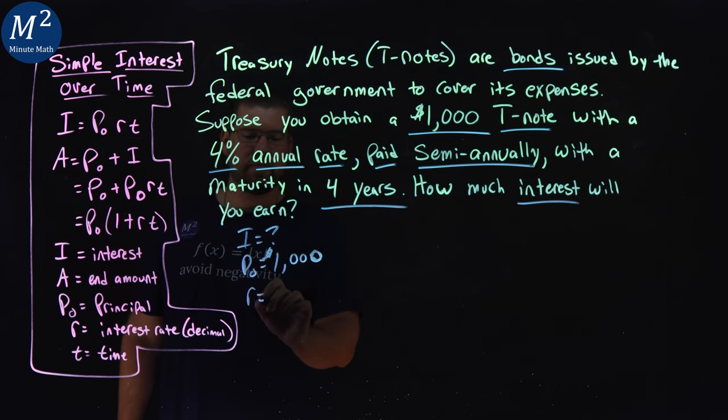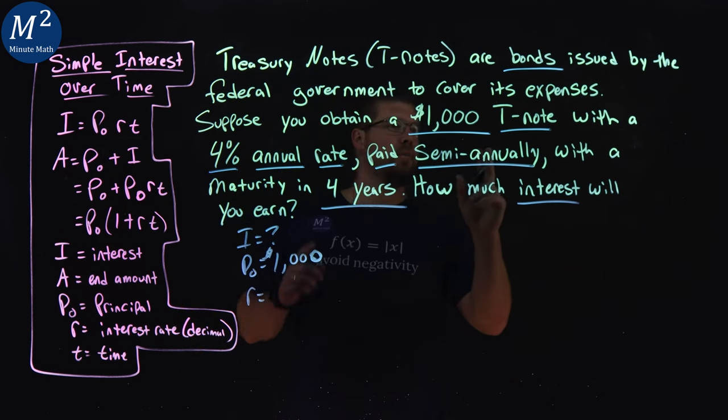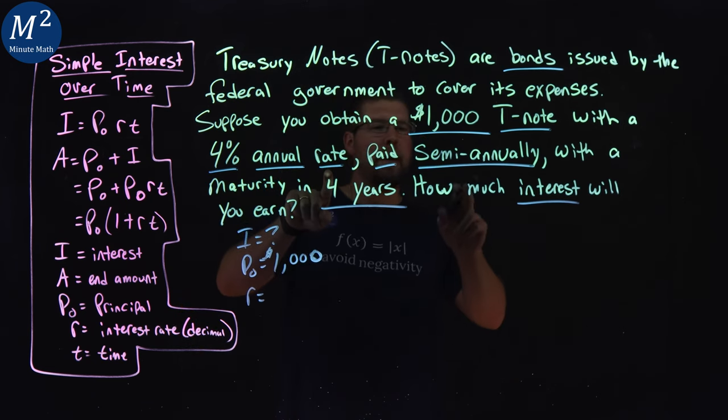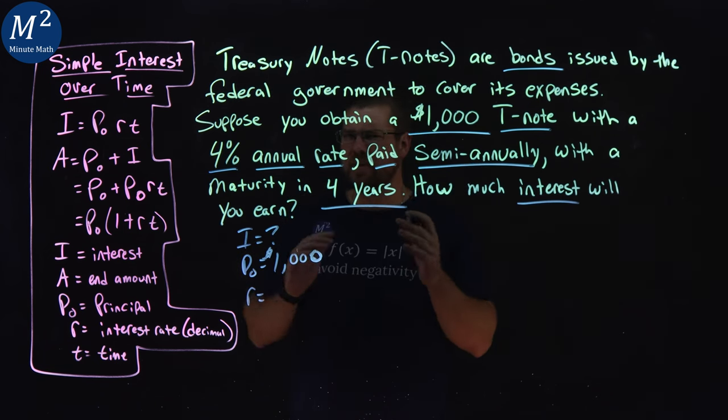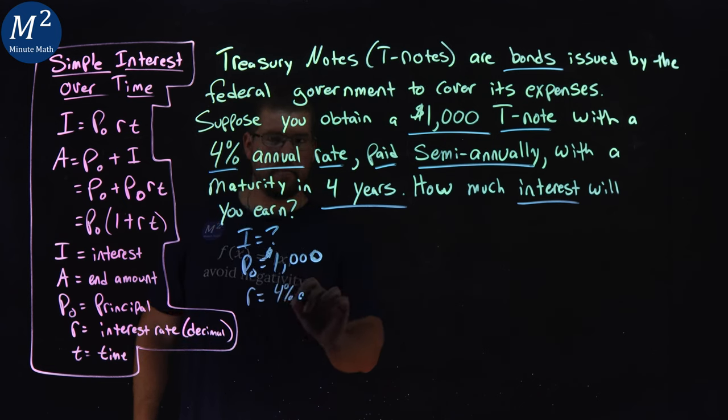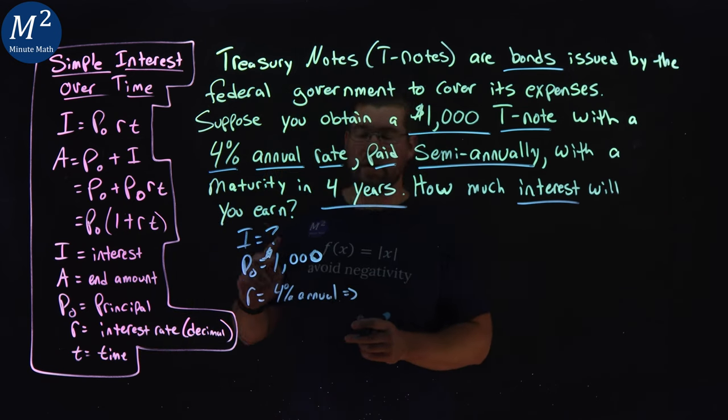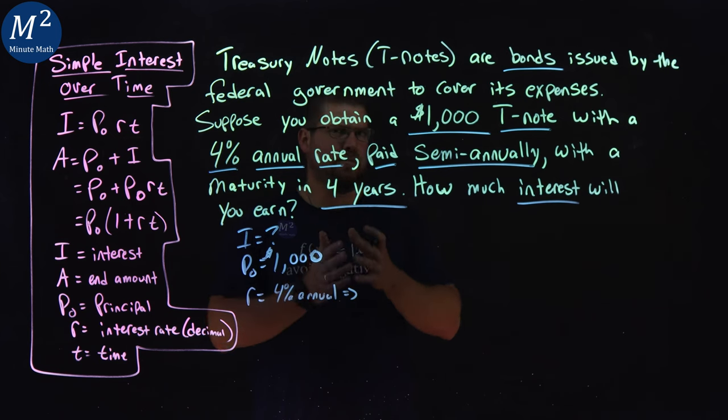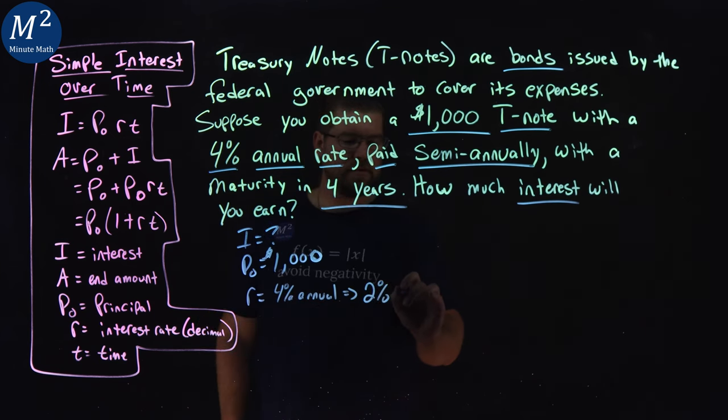Now here's a tricky part. Our rate is 4% annual, but it's paid semi-annually. This is where it gets a little tricky. It's a 4% annual rate, but since it's semi-annually, that happens twice a year, so we have to cut that rate in half for each iteration. So 2% for each time.